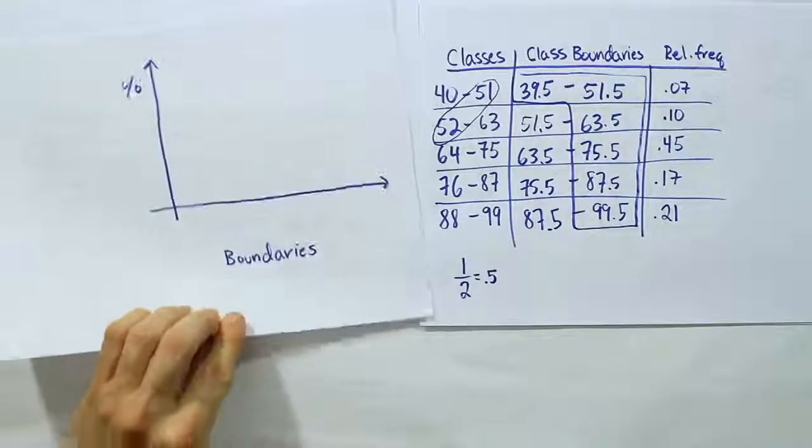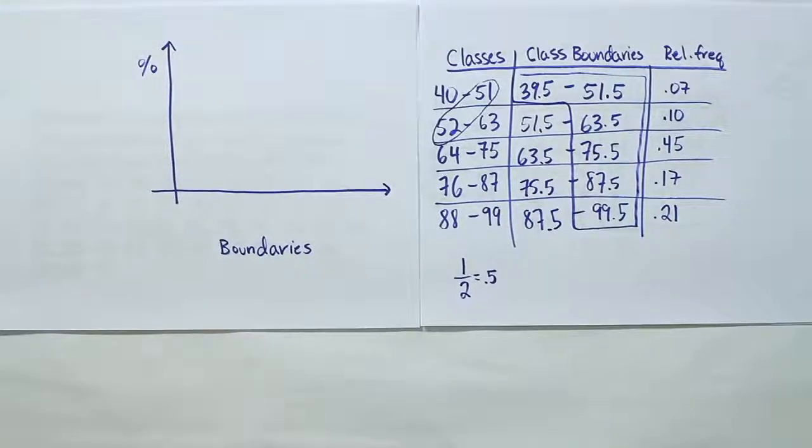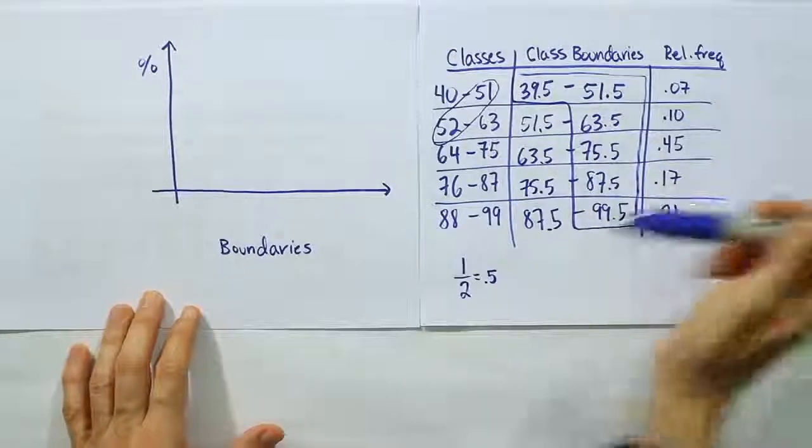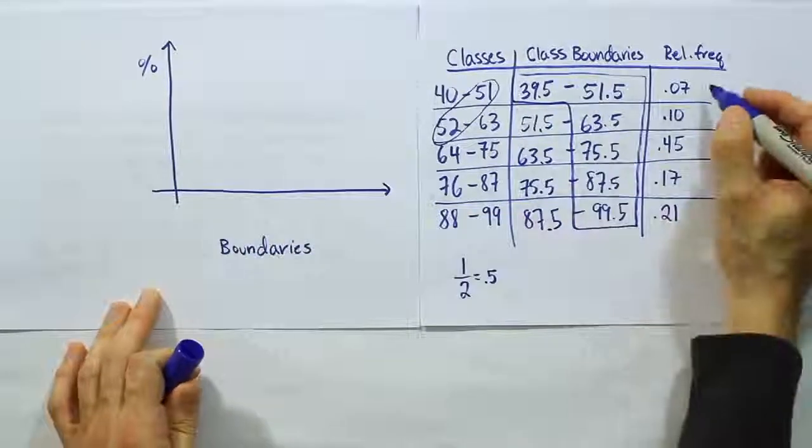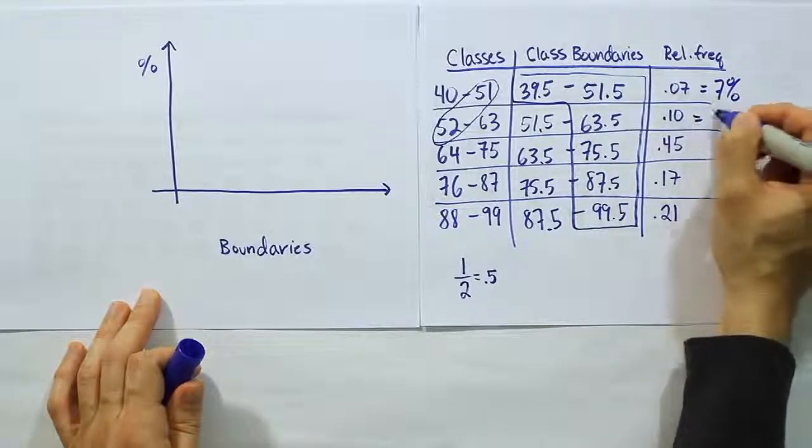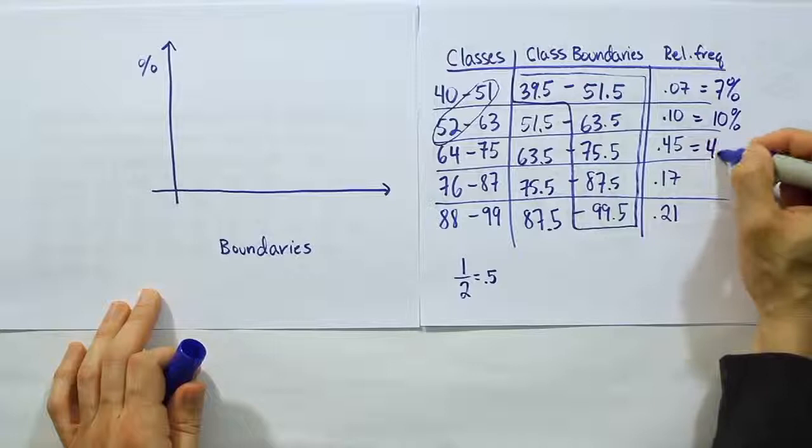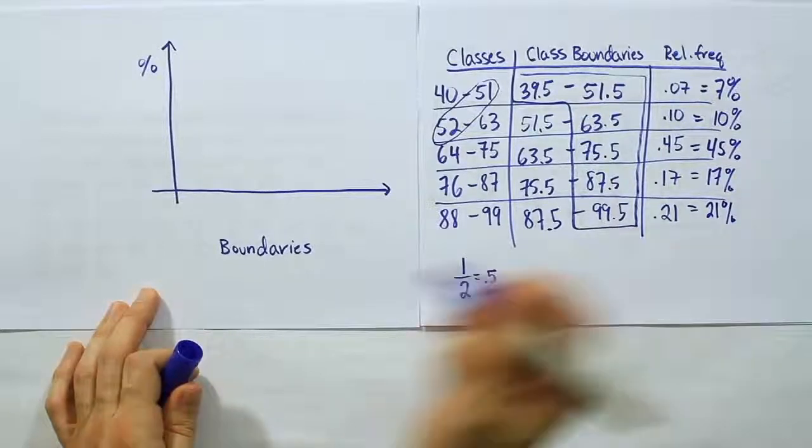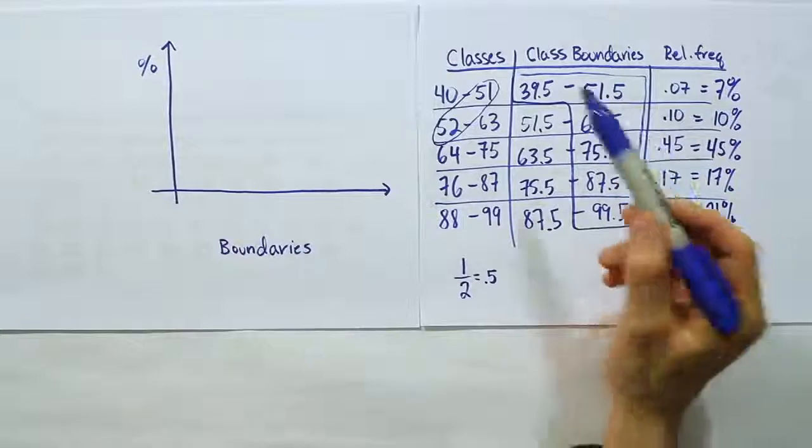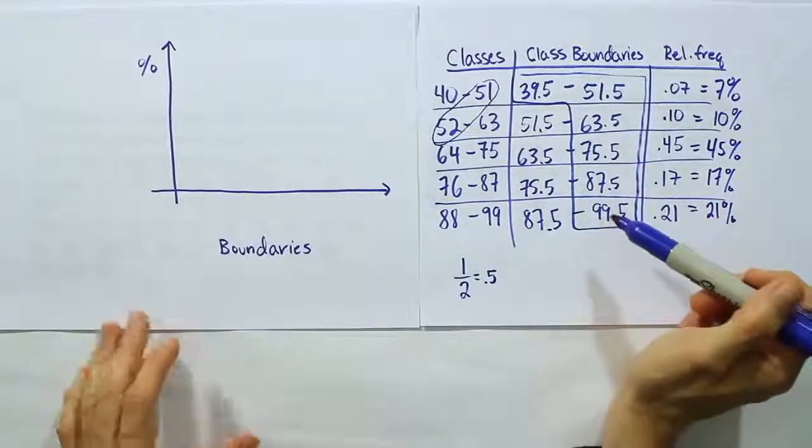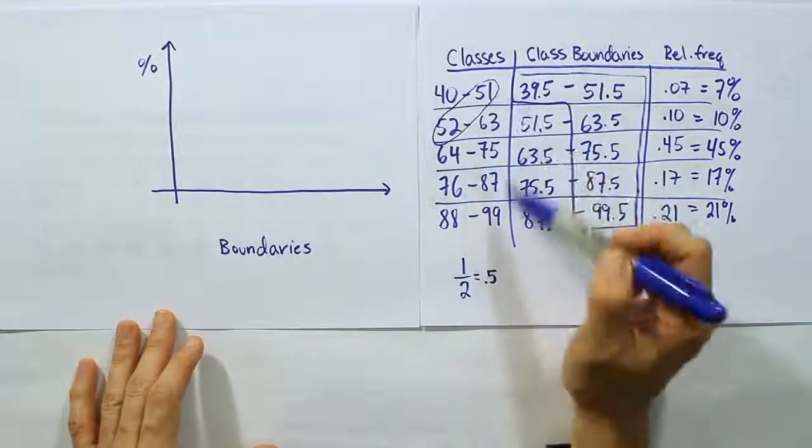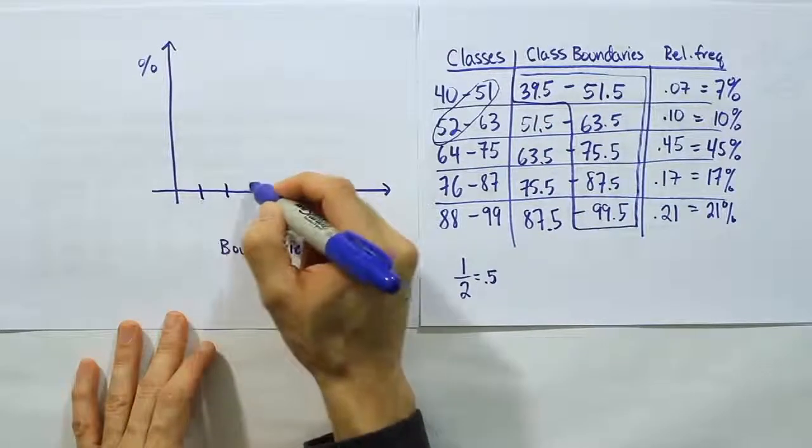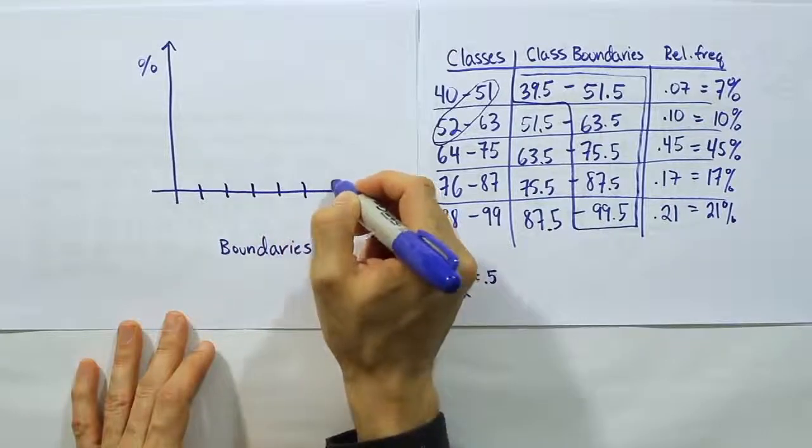Let's go ahead and take out our graph here. So I've created a little table here. Boundaries labeled on the x-axis, percents on the y-axis. Remember, relative frequencies are the same as percents once you multiply by 100. So this is the same as 7%, 10%, 45%, 17%, and 21%. What I'm going to do is label each of these boundaries. I have exactly one more class boundary than I do classes. If I have 5 classes, I'll have 6 boundaries. So let's go ahead and put 6 marks on our drawing, evenly spaced out.